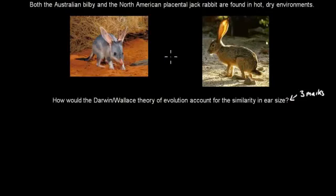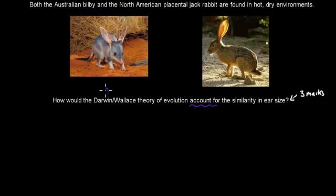Welcome back. For this question, what you should have done is talked about how we can use Darwin's and Wallace's theory of evolution to account for the similarities in ear sizes. There are two major types — convergent and divergent — and you should mention that we're talking about convergent in this one.